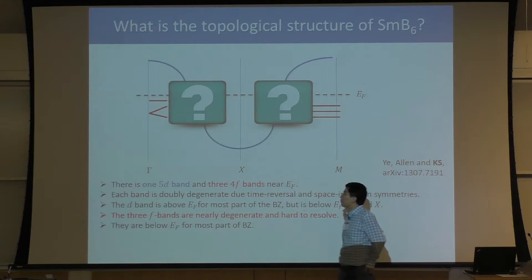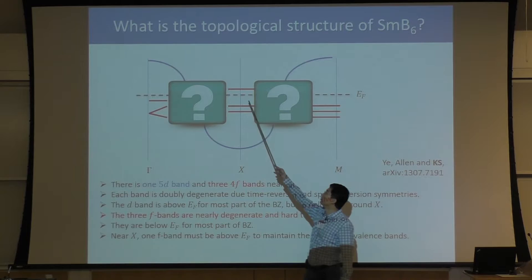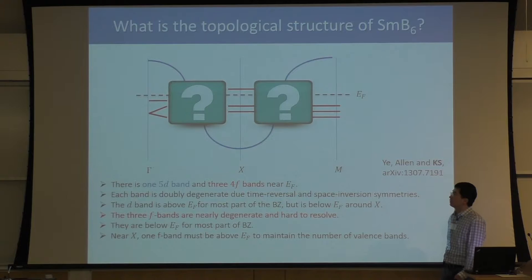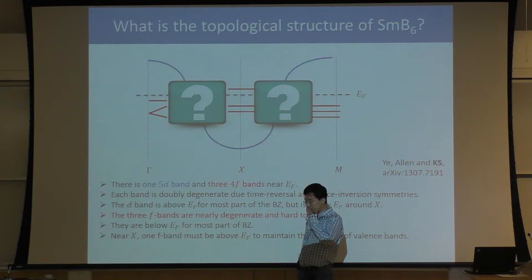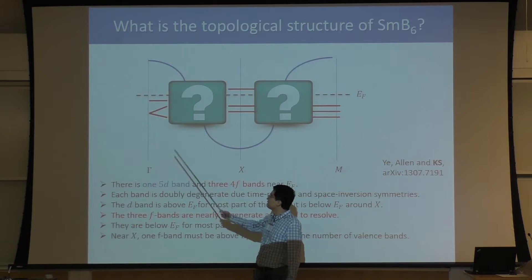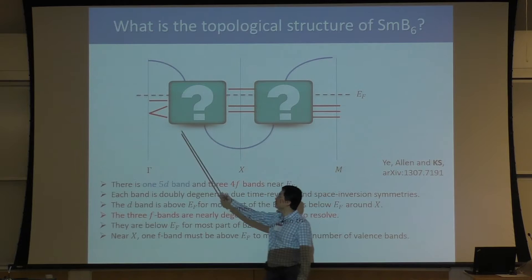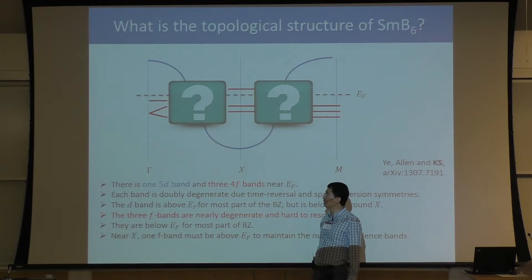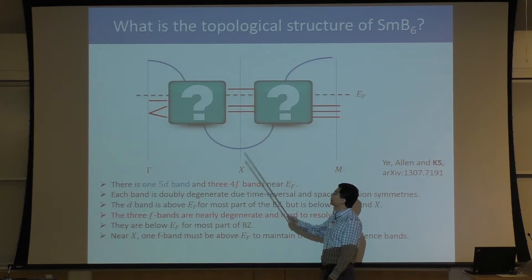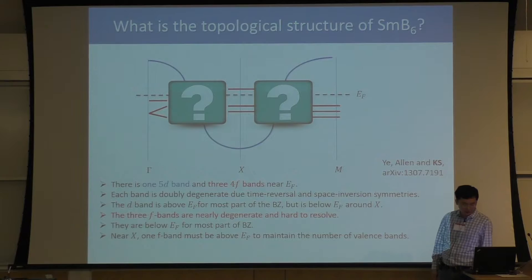For most of the Brillouin zone, the three F bands are below the Fermi energy. At the X point, something different happens: one F band is above the Fermi energy while the other two remain below. This conclusion comes from experiments. If we have an insulator, the number of filled bands can never change as we go from one momentum point to another. We have three filled bands at gamma; at X, we get one additional D band below the Fermi energy, so one F band must be pushed above the Fermi energy. At X point, one D band and one F band have their energies flipped.